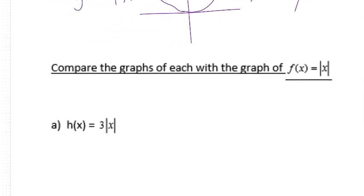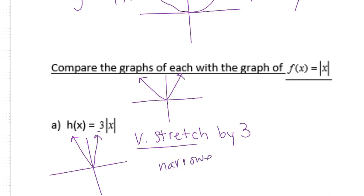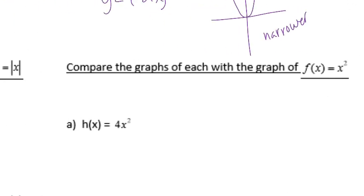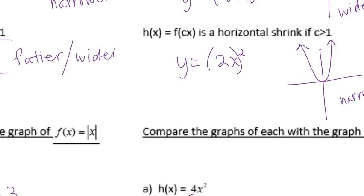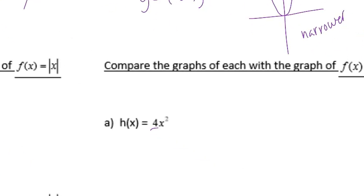Let's look at the absolute value function — the V function, it looks like a V. So if I have 3 out front, not inside the absolute value, this is going to be a vertical stretch by 3. So it's going to actually be narrower — vertical stretch means narrower. The next one: if we're looking at our quadratic and we have 4 out front, that's a vertical stretch by a factor of 4.